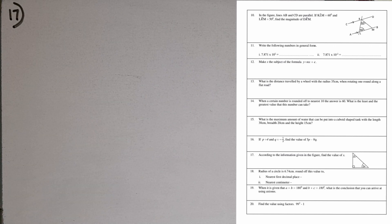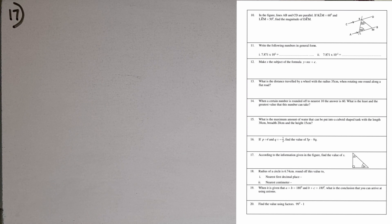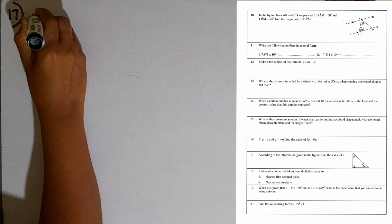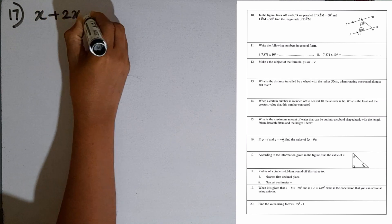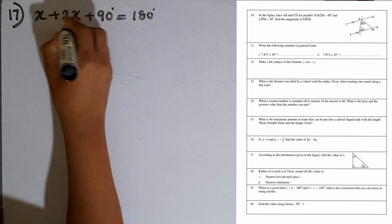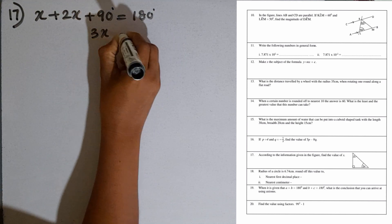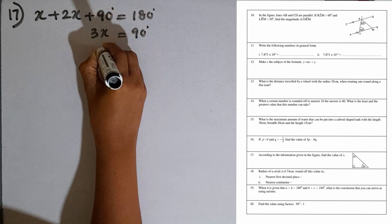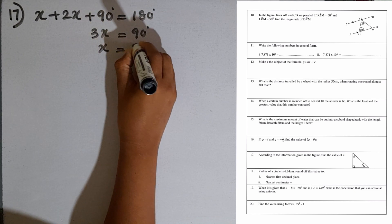Question number 17: according to the information given in the figure, find the value of x. The three angles of the triangle are x, 2x, and 90 degrees. Using the angle sum: x plus 2x plus 90 equals 180, so 3x equals 90, and x equals 90 divided by 3, which is 30 degrees.